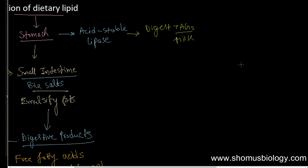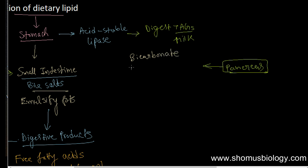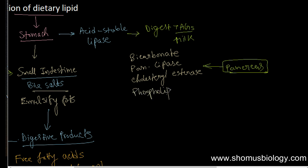The important enzymes acting in the small intestine are secreted by the pancreas. The pancreas secretes bicarbonate — which is not an enzyme but is important — as well as pancreatic lipase, cholesterol esterase, and phospholipase A2. All these components are secreted by the pancreas and act in the small intestine.